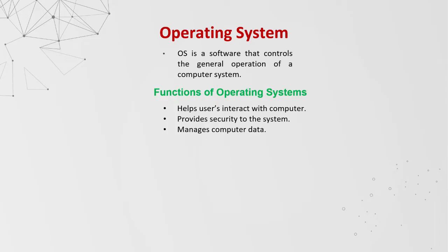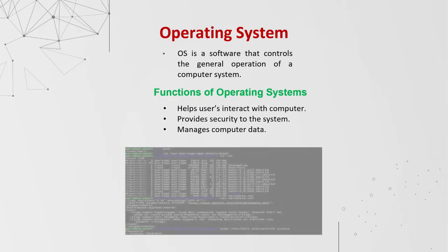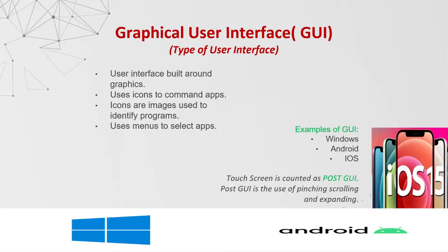The operating system is a software that controls the general operation of a computer. The functions of an operating system are to help users interact with computers, provide security to the system and manage computer data. The graphical user interface, GUI, is a type of user interface built around graphics. Users use icons to command apps — icons are used to identify programs — and menus to select apps. Examples of GUI are Windows, Android and iOS.